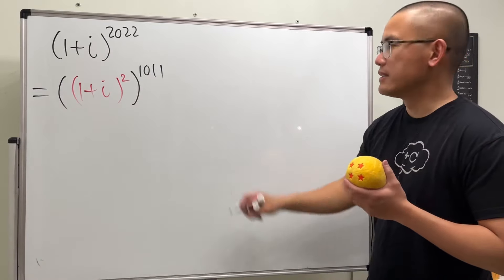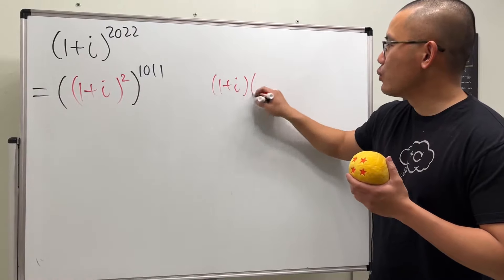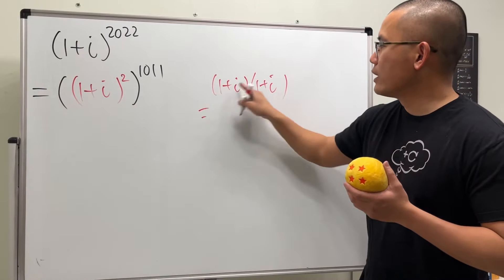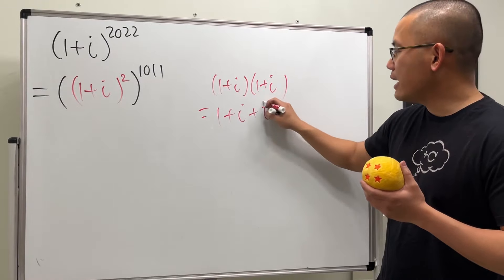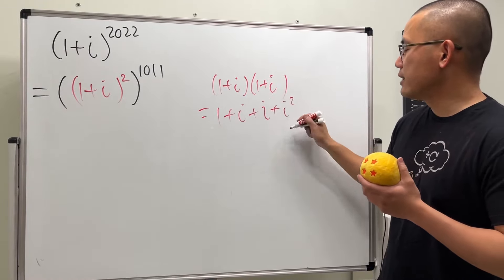And now to figure this out, we can do the traditional way on the side. You see that 1 plus i times 1 plus i, this right here is going to be 1 times 1, which is 1, plus, and we have the i and then the other i, so plus another i, and lastly, we have i squared, which is going to be actually negative 1.